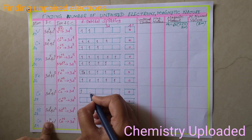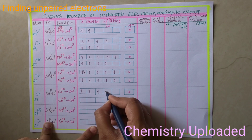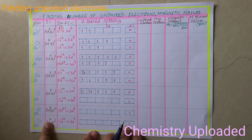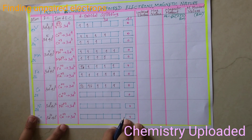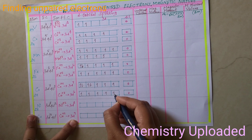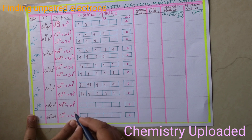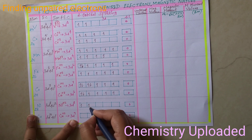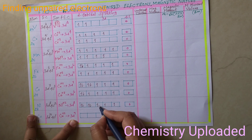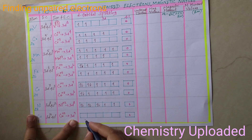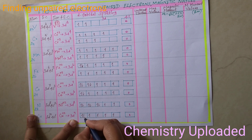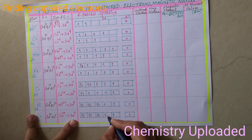For d7 (cobalt 2+), fill 5 singly and then pair 2 orbitals, leaving 3 unpaired. For cobalt 3+, that is d6 — fill 5 singly and pair 1. For d8 (nickel 2+), fill 5 singly and pair 3 orbitals, giving 2 unpaired. For d9 (copper 2+), fill 5 singly and pair 4 orbitals, leaving 1 unpaired.